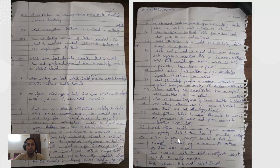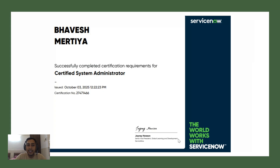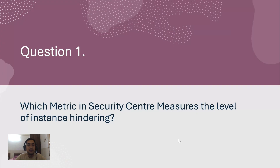These are the exact questions which were asked to me, in series order. This is my CSA exam certification, which I received on 3rd October. I wish you all the best — if you clear the exam you will get the same certificate. My exam was at the Gurgaon JMD location, Sector 48, and I booked my exam from the Web SSR.